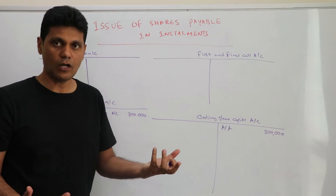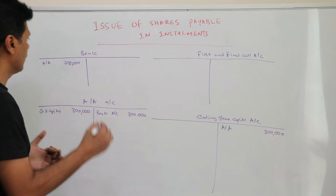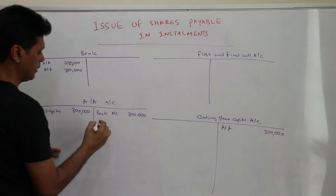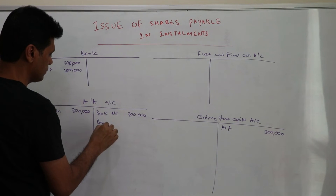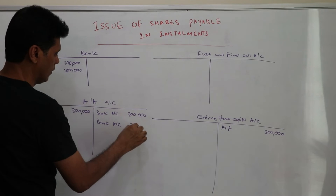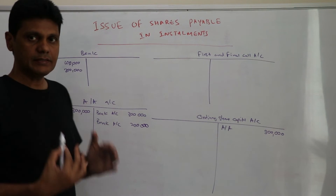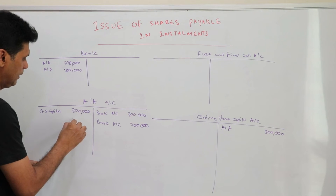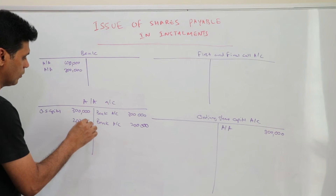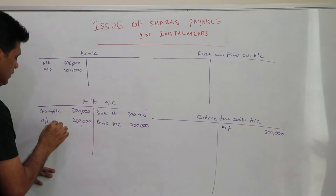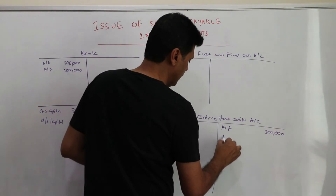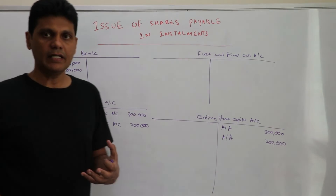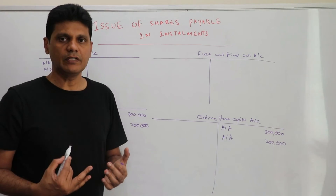The second installment is the allotment of $2 per share. When the money is received, the bank account is debited $200,000 and the application and allotment account is credited $200,000. This entire amount is then transferred to the ordinary share capital account: debit application and allotment $200,000 and credit ordinary share capital $200,000.